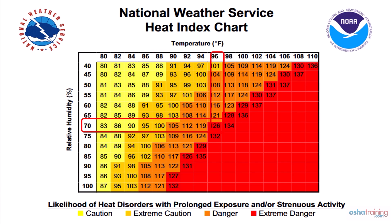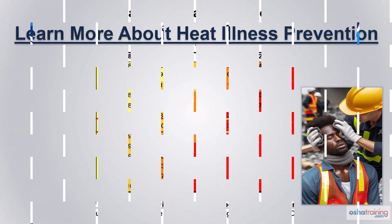And if the actual temperature is 98 degrees with a humidity level of 70 percent, the heat index feels-like temperature jumps all the way up to a staggering 134 degrees. This is well into territory considered to put workers at extreme danger of suffering heat illness. So in addition to actual temperatures, do not forget to also factor in humidity levels to determine the heat index when evaluating the risks of the work environment.